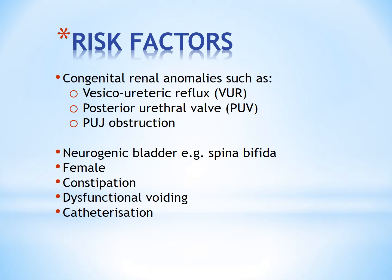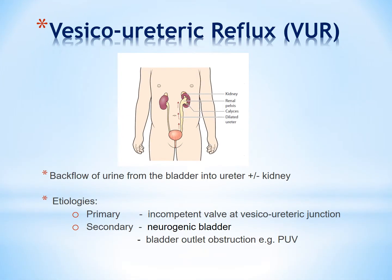Vesicoureteric reflux is a condition where there is backflow of urine from the bladder into the ureter, and in more severe cases, up to the kidney leading to hydronephrosis. The etiology can be primary or secondary. In primary VUR, there is genetic predisposition, and the functional valve at the vesicoureteric junction is incompetent, leading to reflux. In secondary VUR, the reflux occurs because of either neurogenic bladder or bladder outlet obstruction such as in posterior urethral valve.